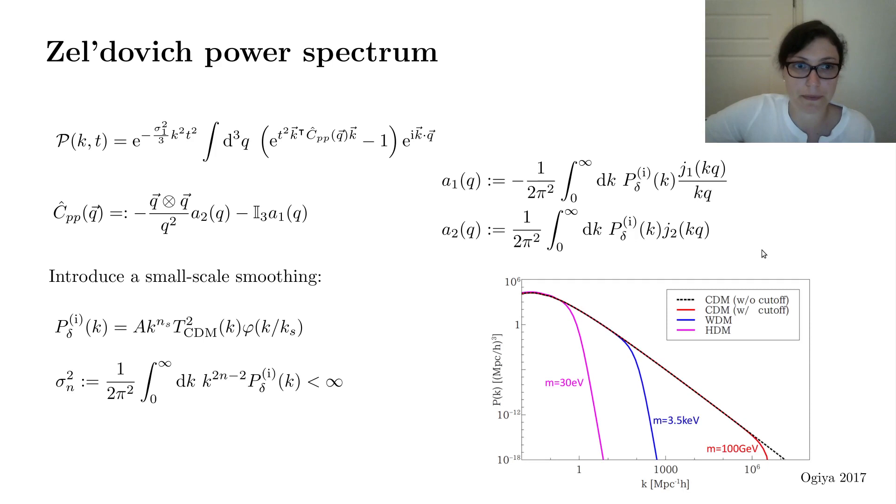In order to investigate a more diverse set of dark matter models, we introduce a small-scale smoothing, such that the initial power spectrum can be written as an amplitude times k^ns, which is the spectral index, then we have the transfer function of cold dark matter squared, and we have a smoothing kernel that can describe various temperatures of dark matter. Without this smoothing, we have cold dark matter, and for successively smaller k-values that are cut off, we get hotter and hotter dark matter. Furthermore, we see that we have these σ² terms, which are the moments of the initial power spectrum, and by introducing a smoothing that is exponential, we can ensure that all these moments exist.